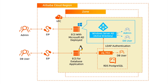In this tutorial, I will first deploy an ADDS on ECS Windows Server and configure the LDAP user for database access. Then, I will configure the ADDS accessing on RDS PostgreSQL database as well. Finally, I will try to access the RDS PostgreSQL database from another Linux ECS through this ADDS LDAP user.